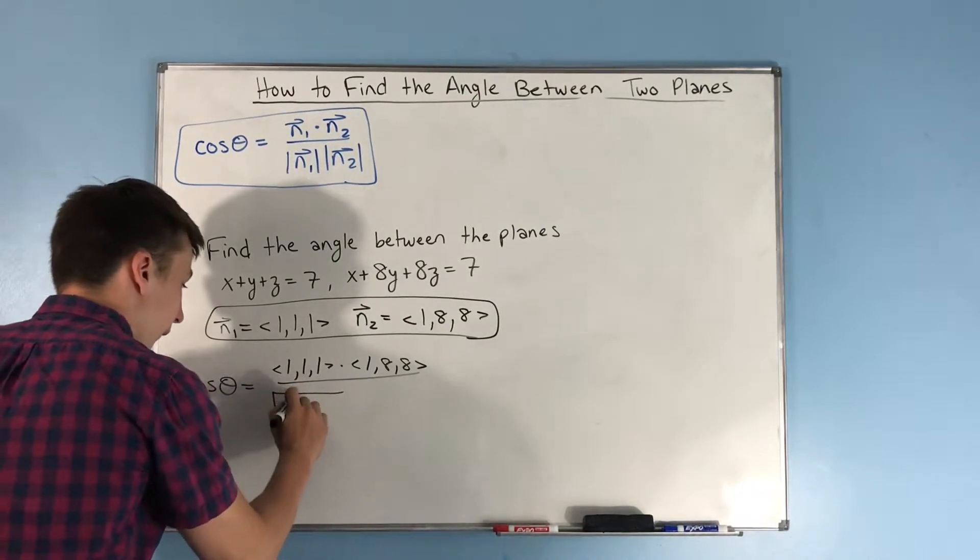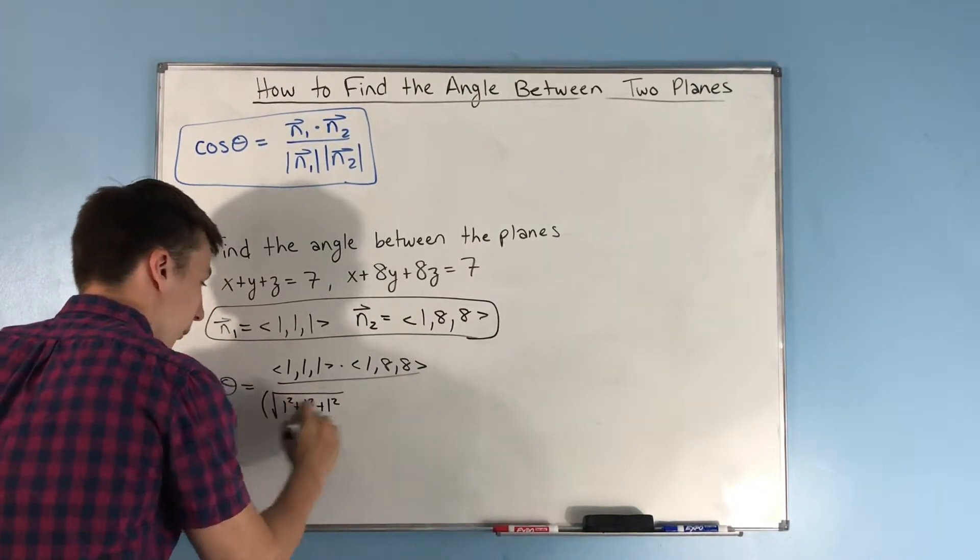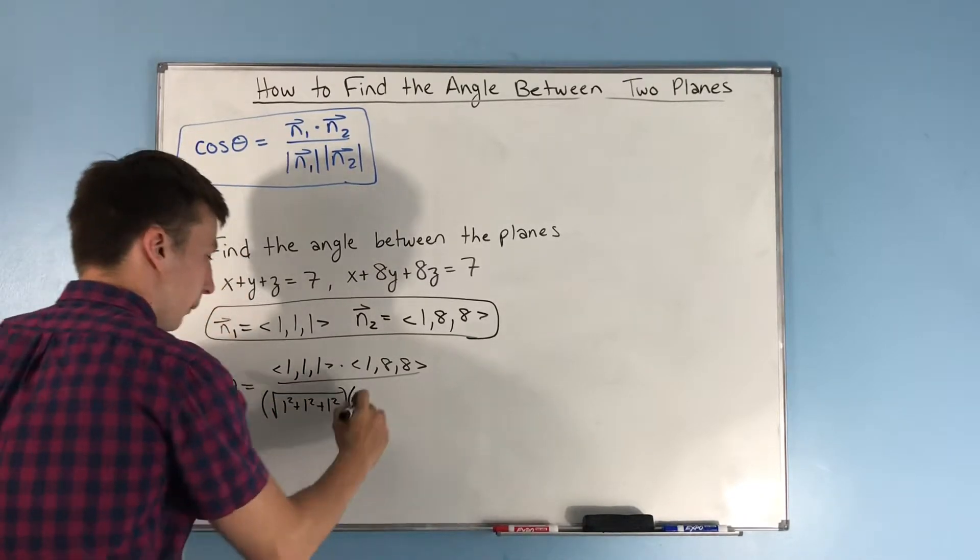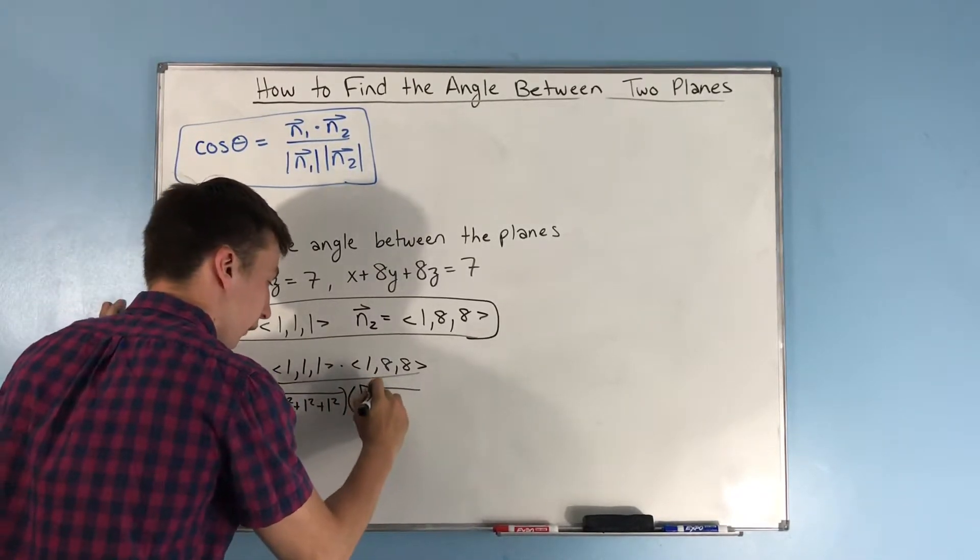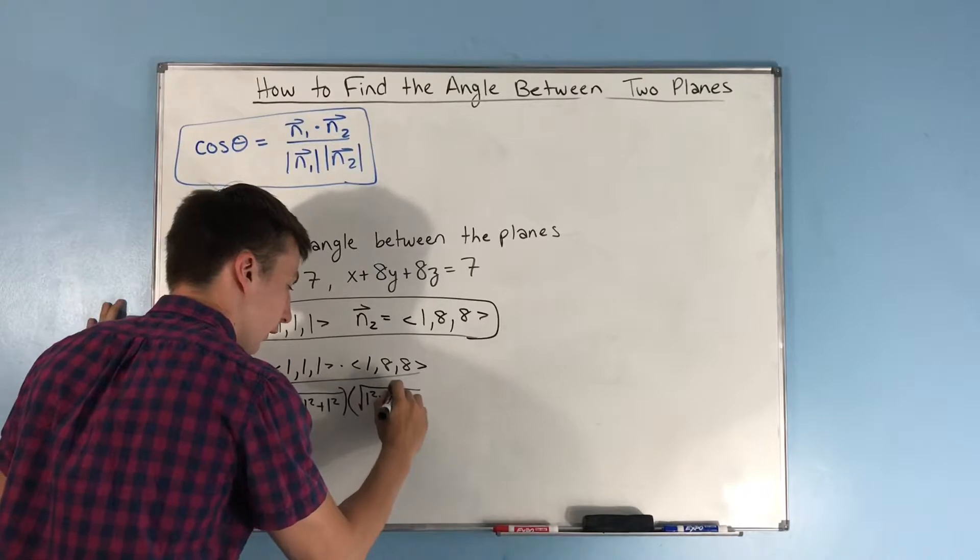I'll just plug in our distance formula for the magnitude. We have the sum of the squares on the inside. So we have 1 squared plus 1 squared plus 1 squared. And we're going to multiply that times the square root of sum of the squares, 1 squared plus 8 squared plus 8 squared.